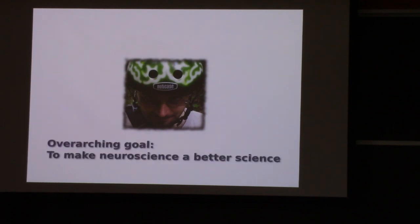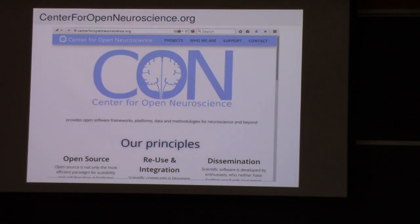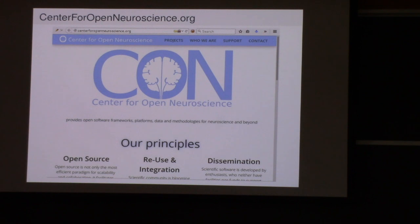My overarching goal here today, or what I'm primarily doing recently, is to make neuroscience a better science without doing much science, kind of. I am working on developing platforms and solutions and unfortunately don't have much time left to actually do cool stuff. To put an umbrella above all our projects, we organized the Center for Open Neuroscience, which is my tiny room in that corner of this building. What we provide from the center includes open software platforms, frameworks, data, methodologies — all kinds of goodness.